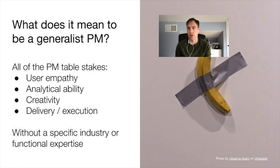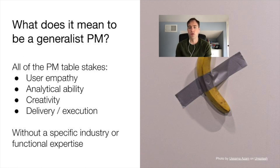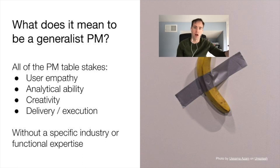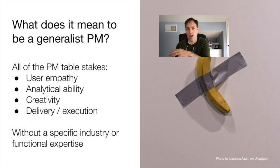The major tech companies — Google, Facebook — tend to have a generalist model, in part because they have such a broad array of businesses and they want product managers to be able to move. Maybe you're in Facebook's AR VR unit at one point, and then you move over to the ads unit for another promotion step in your career.